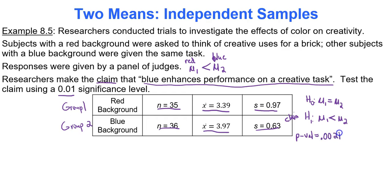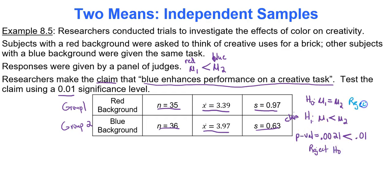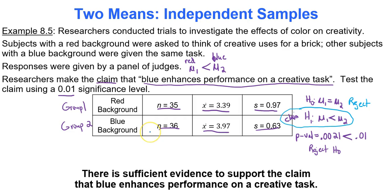We compare the p-value to the significance level alpha, which is 0.01. Is 0.0021 less than 0.01? It clearly is. Since we're under alpha, we reject the null hypothesis. We're rejecting the null, which means all eyes are pointing to the claim as being supported. Our summary statement is: there is sufficient evidence to support the claim that blue enhances performance on a creative task.